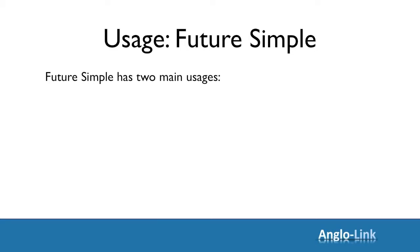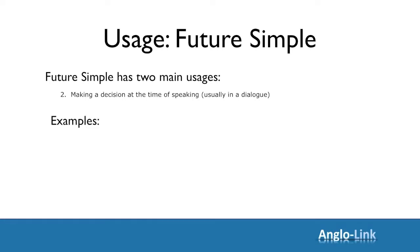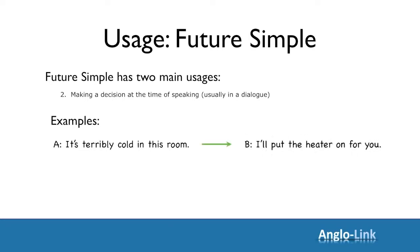The second usage of the future simple tense is when you make a decision at the time of speaking. This usually happens in a dialogue — someone says something or asks you to do something, and you react using the future simple. For example, someone says it's terribly cold in this room, and you decide at that moment to put the heater on. You say: I'll put the heater on for you.